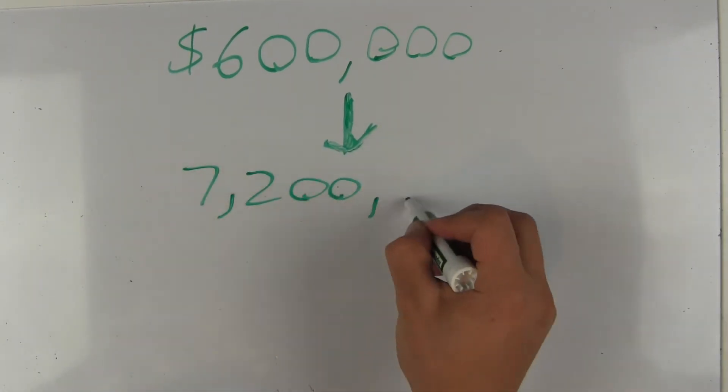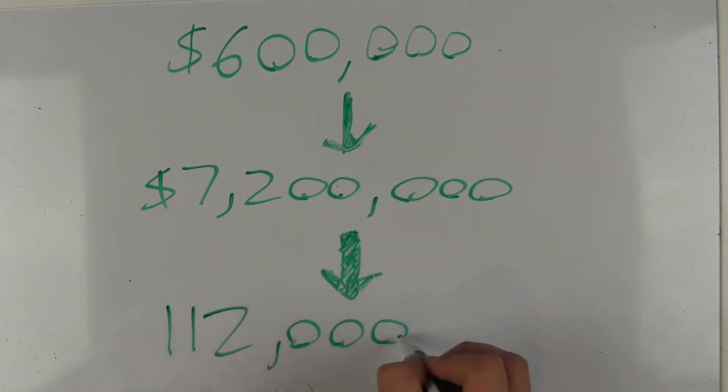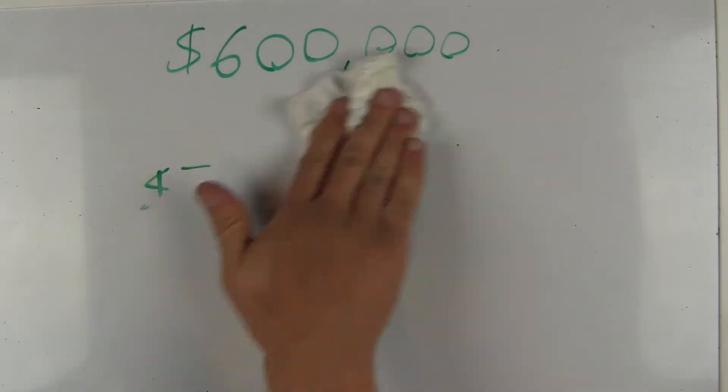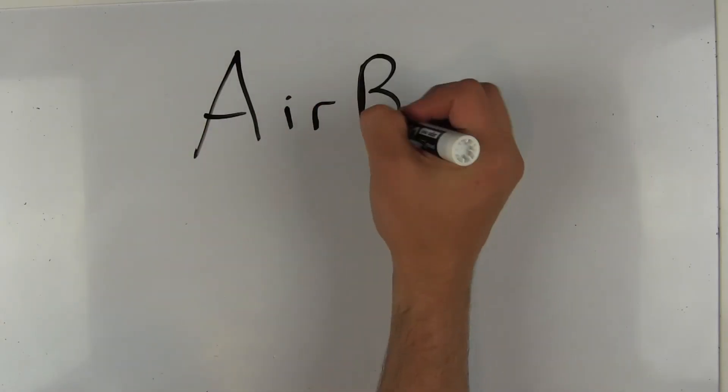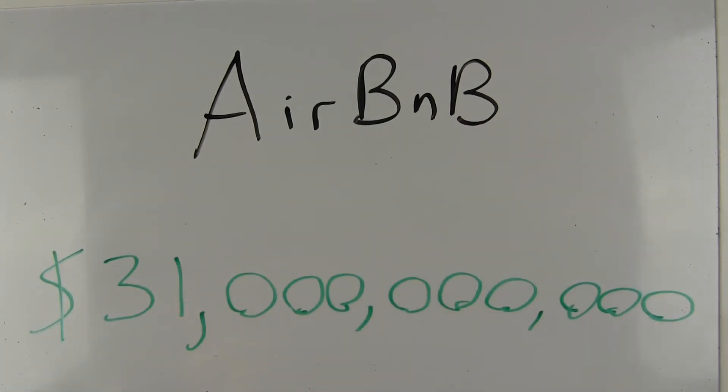They raised $600,000 in seed money from Sequoia, then $7.2 million, and following that $112 million from many investors. As of May 2017, Airbnb is valued at $31 billion.